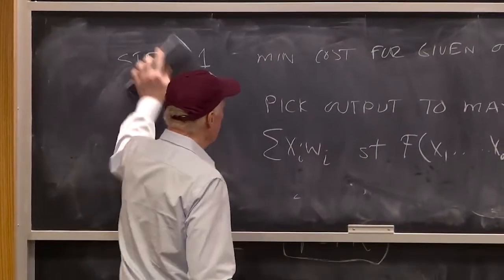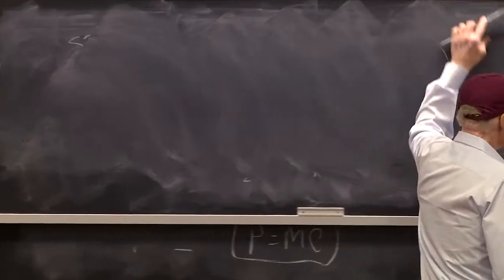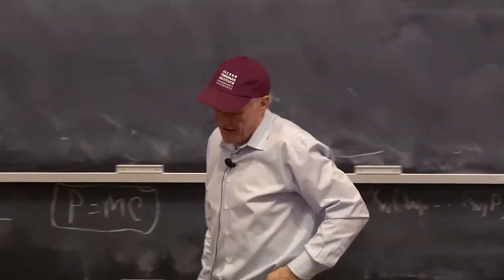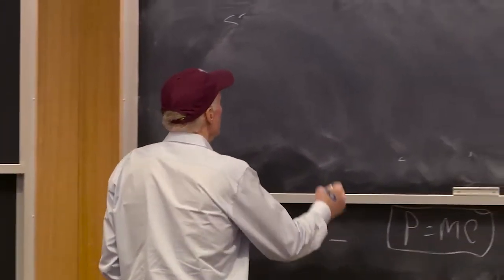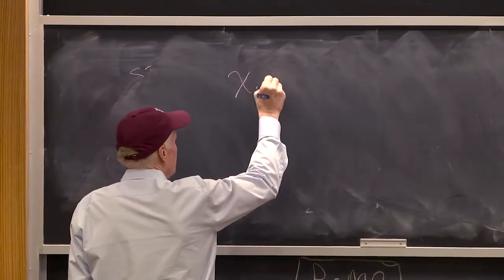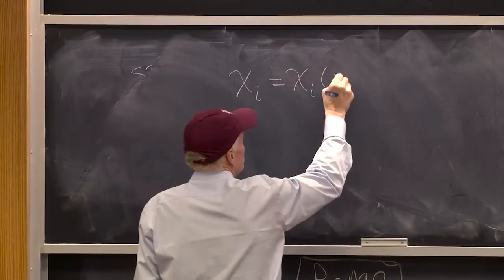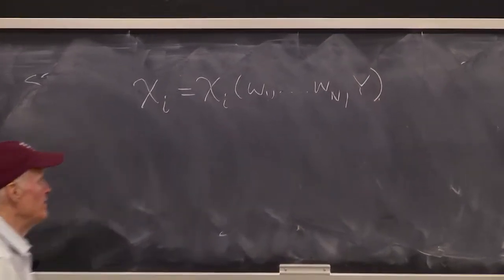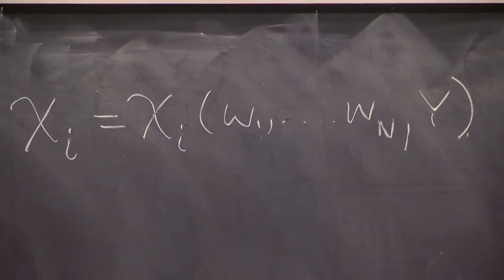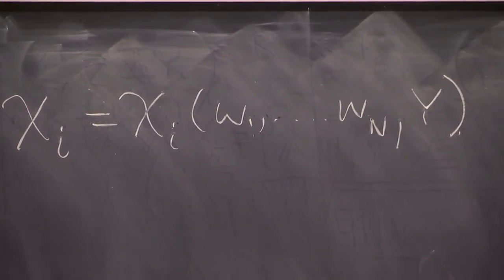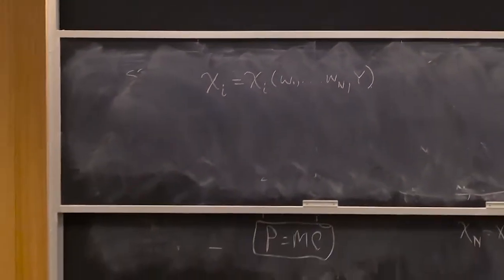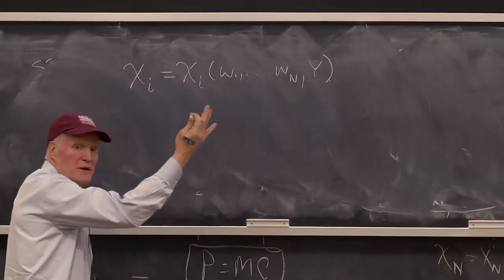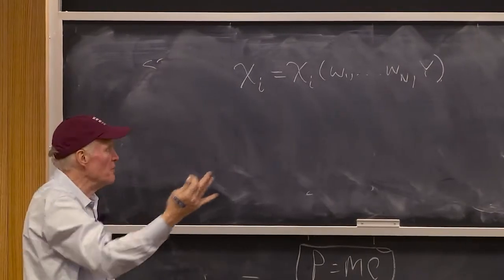We don't have the Slutsky equation, so what do we have? We can actually figure out a relationship between unconditional factor demand and conditional factor demand. Remember, Xi equals Xi of W1 up to Wn and Y. The firm, no matter whether it's profit maximizing in the unconditional case or cost minimizing, it's still always got to be true that whatever level of output they choose, they got to be cost minimizing, because cost minimization is subsumed in profit maximization.